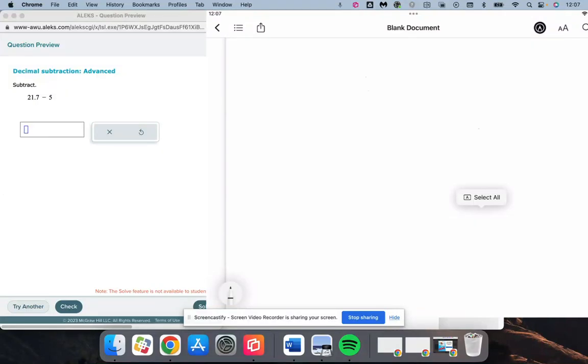So decimal subtraction advanced, we have 21.7 minus 5. There is no decimal showing, so we need to recognize that the decimal would come after the whole number.